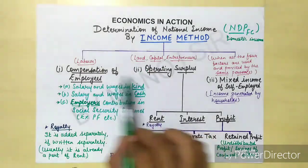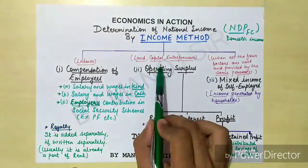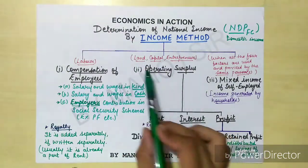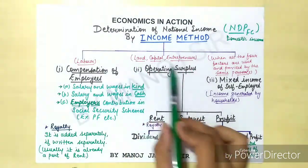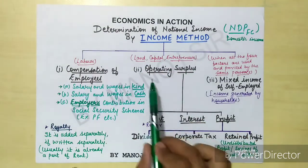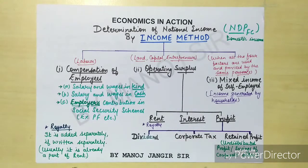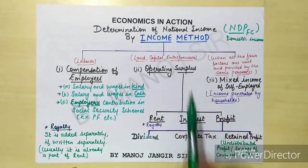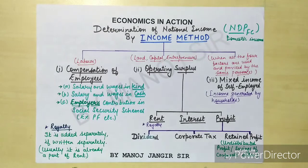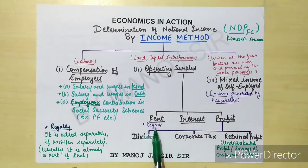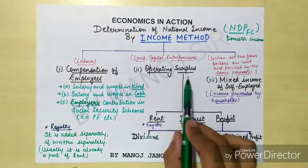After labor, we have three remaining factors: land, capital, and entrepreneur. What we get in return after providing these factors of production is called operating surplus. Operating surplus is the summation of rent, interest, and profit. To find it, you add these three things: rent, interest, and profit — and you get operating surplus.